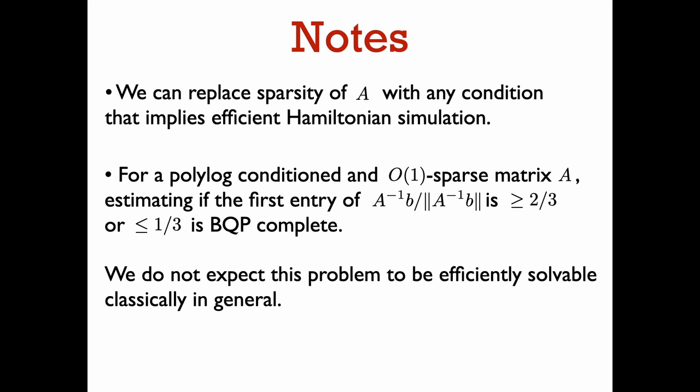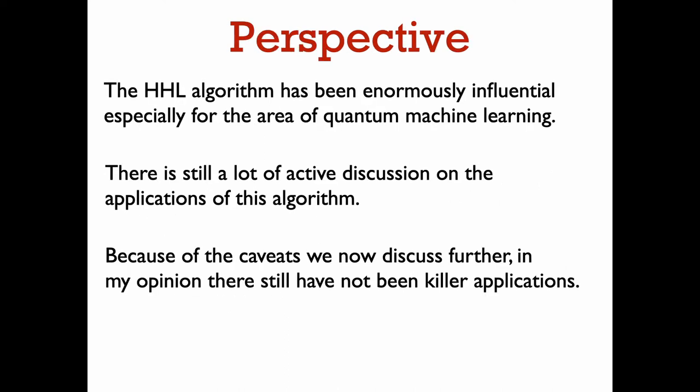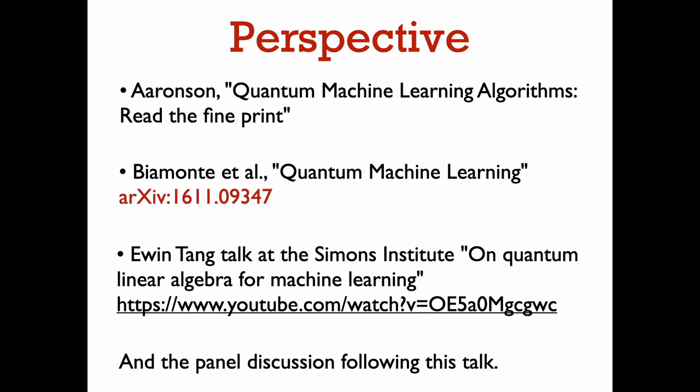This is a relatively simple version of HHL that can be improved in several ways. You can reduce the 1/epsilon dependence to log(1/epsilon), and use a more sophisticated form of amplitude amplification to make the kappa dependence linear — and both improvements can be achieved simultaneously. I give archive references for these improvements. The terms kappa, s, and T_b are really what determine whether HHL gives a speedup in a given application. Note that you don't actually need A to be s-sparse; you just need an assumption implying efficient Hamiltonian simulation. Also, this problem is BQP-complete: estimating the first entry of A inverse times b for a constantly-sparse matrix A is BQP-complete, so we don't expect to classically simulate this algorithm. The HHL algorithm has been enormously influential, especially for quantum machine learning, though in my opinion we still haven't found any killer applications.